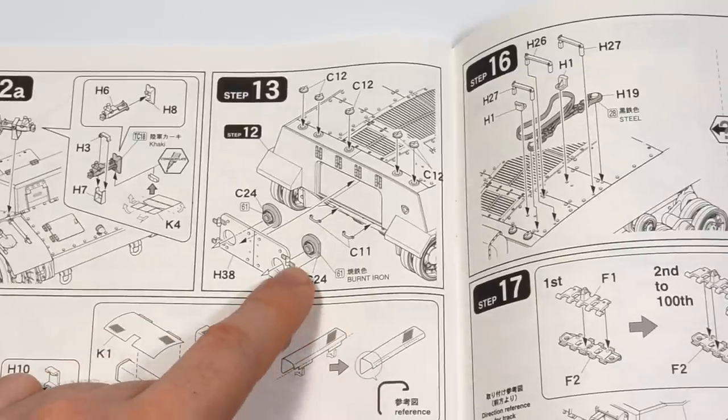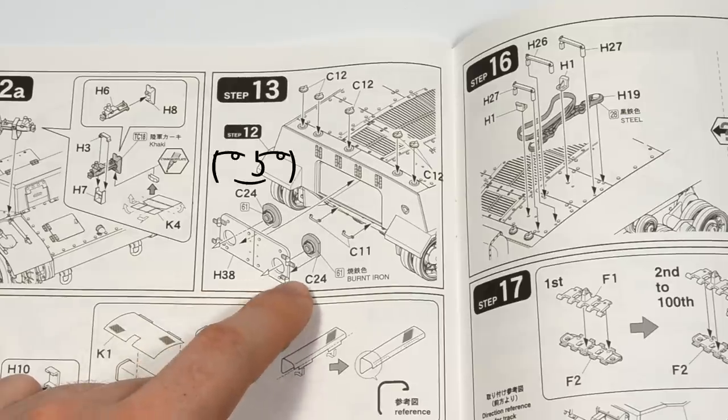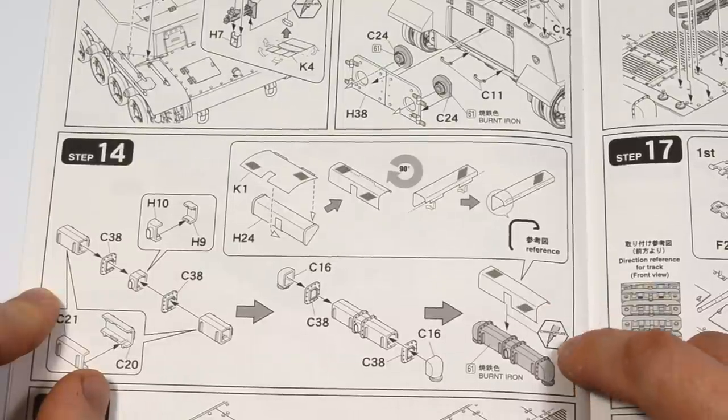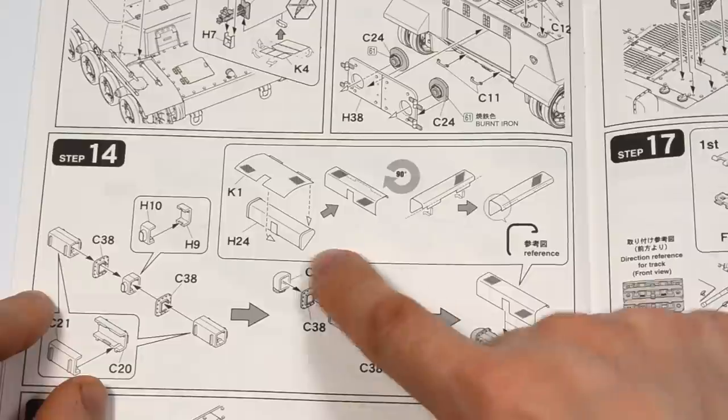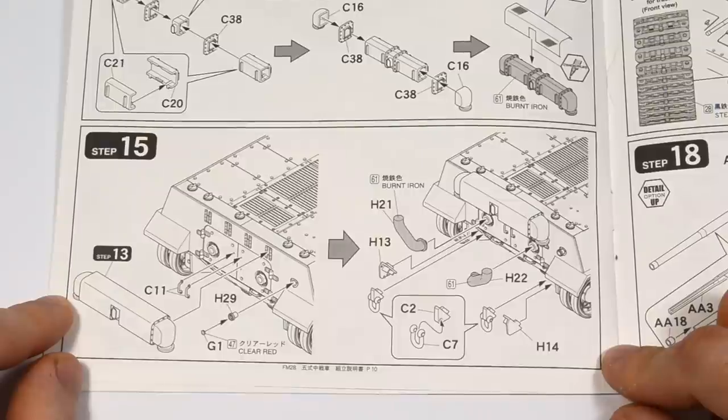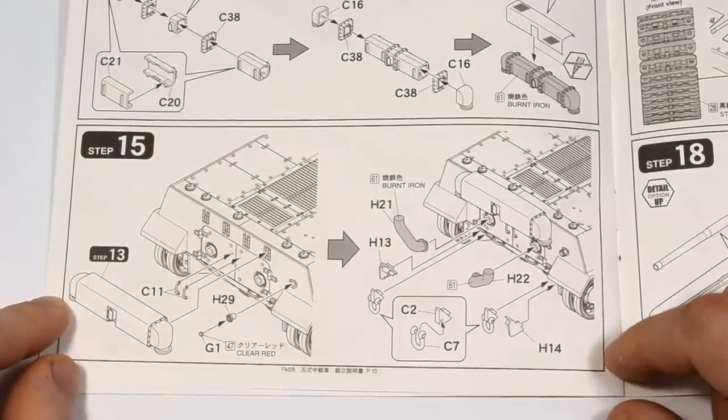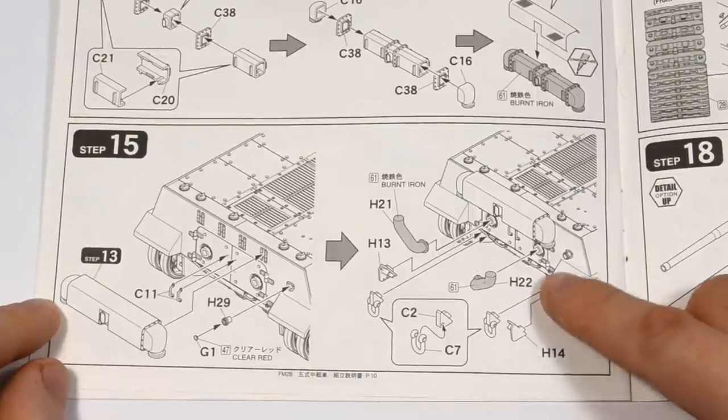The exhaust has this internal detail which is awesome for unspecified reasons and the muffler is very detailed. It even has this photo etched mesh and they provide you with a jig so you can bend it into shape easily. This is something I only experienced with Tamiya and their BT-7 model. I just love Japan. They have anime and awesome models.